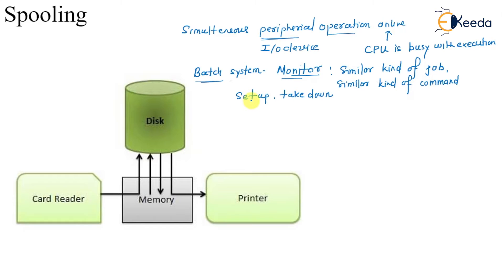In this case what we are having is mechanical devices. This card reader is a mechanical device. Previously I am talking about earlier mechanical and this printer was also a mechanical device. Both are mechanical devices.